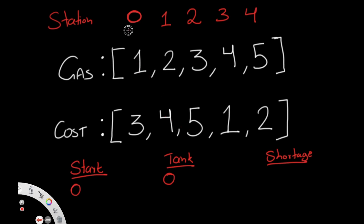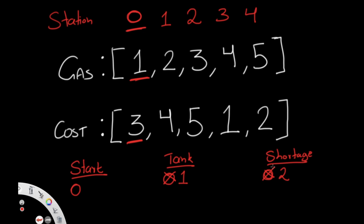Starting at station zero, we fill up our tank with one liter of gas. To get to station one, it costs three liters, but we only have one liter — it's not possible. So starting at station zero is not valid. We add the shortage of gas — three minus one equals two — to our shortage variable, making shortage equal to two. We now change our start position to station one and reset our tank to zero.